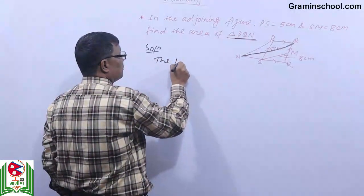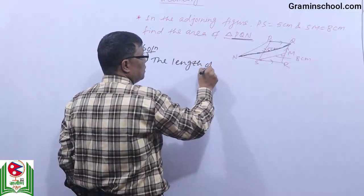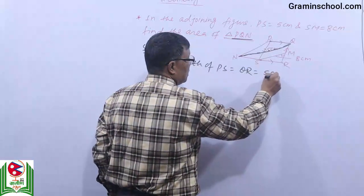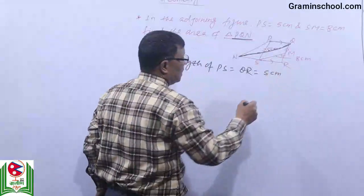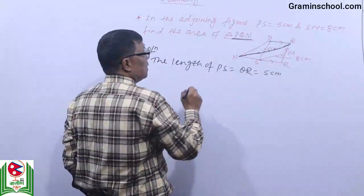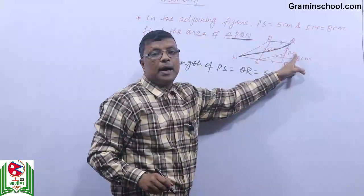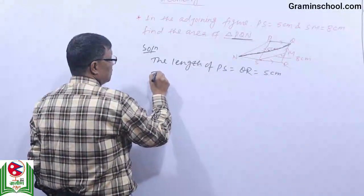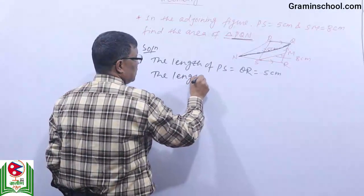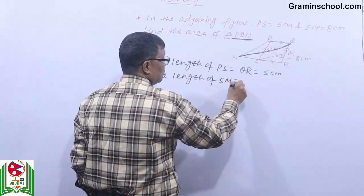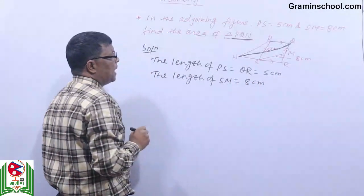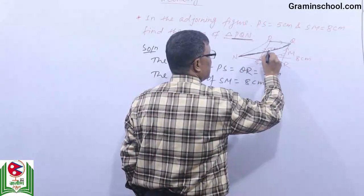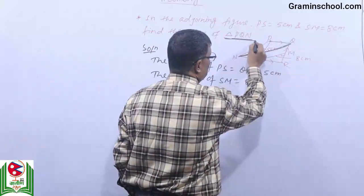The length of PS is equal to QR, which equals 5 cm. PS equals 5 cm is equal to QR equals 5 cm — these are the opposite sides of the parallelogram. The length of SM, which is given as 8 cm.